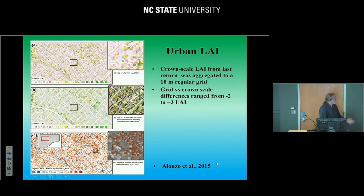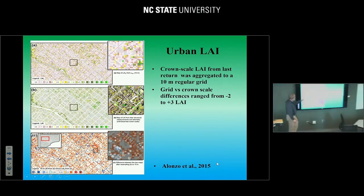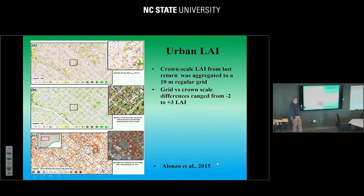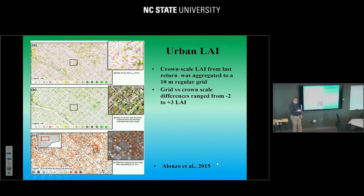With that in hand, you can make a map. The middle map shows the object-scale leaf area index — calculating LAI for individual trees delineated with watershed crown segmentation. Then, because we're often interested in raster-based modeling, he asked the question: what's the consequence of converting this over from an object-based analysis to a raster-based analysis? He translated it to 10 meters — the raster-based LAI map equivalent. The difference between the two showed it did pretty well, with an LAI error of anywhere between 2 to 3 positive or negative between the object-based and raster-based versions.